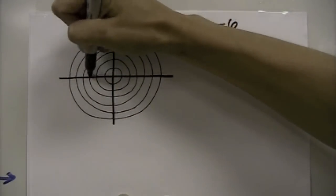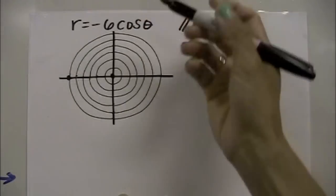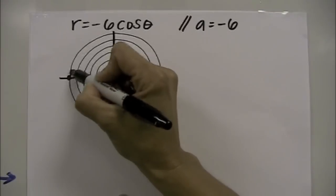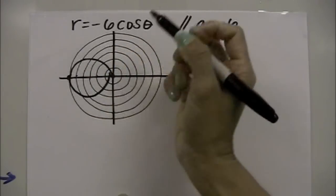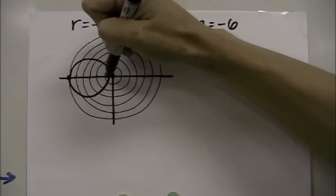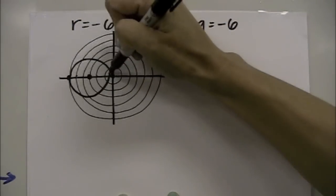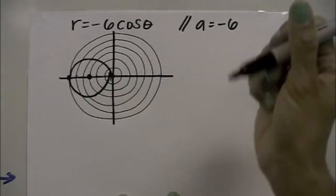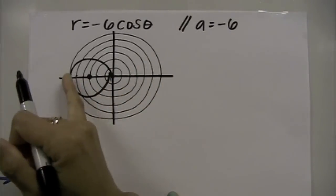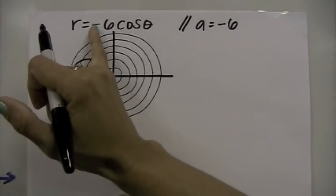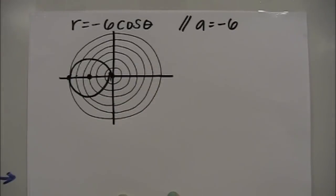I'm going to go out 6 units — that's going to represent the diameter of this circle. The center is falling 3 units out to the left. So when you have cosine, you're along the x-axis, and a indicates the length of your diameter. The negative indicates that you're on the left side of the y-axis.